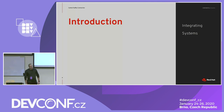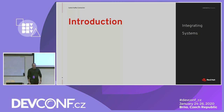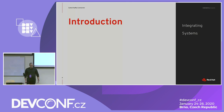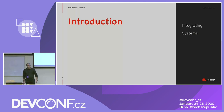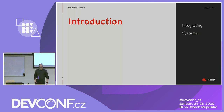As application developers, one of the challenges that we always have is to integrate systems. We continue to have to make our systems talk to other systems and talk to the external world. This is a challenge that keeps evolving, and with the introduction of tools such as OpenShift, Kubernetes, and Kafka, there are a new set of functionalities that we can use to simplify the job of integration.